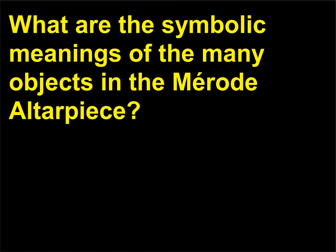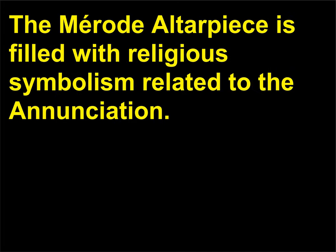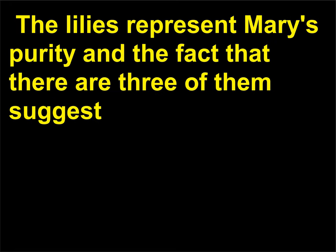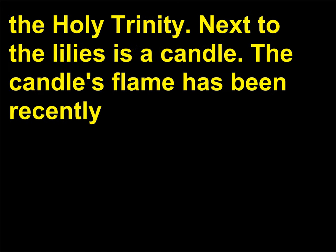What are the symbolic meanings of the many objects in the Merode Altarpiece? The Merode Altarpiece is filled with religious symbolism related to the Annunciation. On the table next to Mary are lilies in a vase. The lilies represent Mary's purity, and the fact that there are three of them suggests the Holy Trinity.